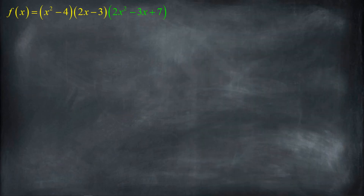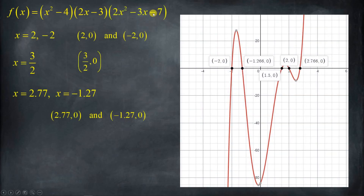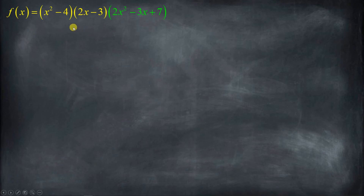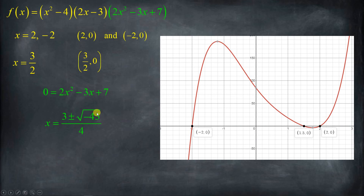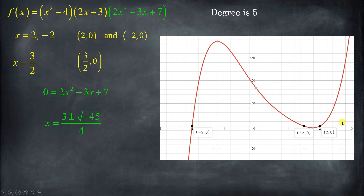What if you changed that last factor to x squared plus 5x plus seven instead? The first two factors are the same — giving x equals plus and minus two, and x equals three-halves. But when you plug x squared plus 5x plus seven into the quadratic formula, you end up with a negative number under the square root. That's imaginary, so that factor doesn't offer any real x-intercepts. We only have three x-intercepts, even though it's still a degree-five function. So if you see a graph with three x-intercepts, you know the degree is at least three — but you don't know for sure it's not higher.